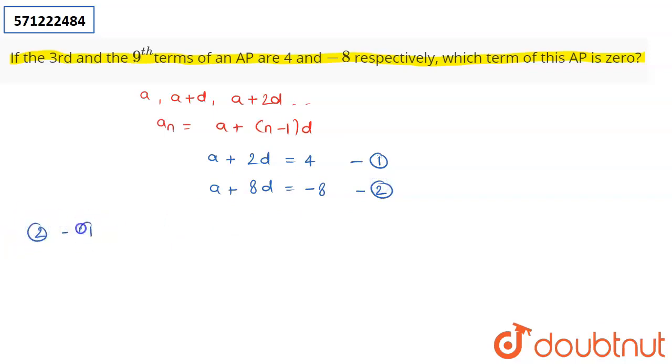Now to simplify, you have to subtract the first equation from the second equation. It becomes 6d equals -12, or I can say the value of my common difference is going to be -2.